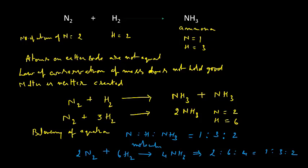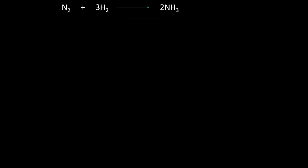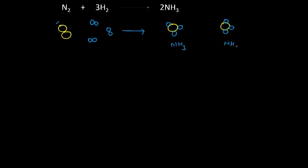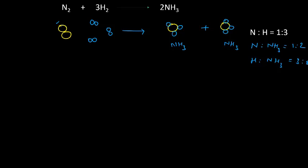See this balanced equation illustrated with a figure. One nitrogen molecule reacts with three hydrogen molecules and we get two ammonia molecules. The ratio of nitrogen to hydrogen is one to three; nitrogen to ammonia is one to two; and hydrogen to ammonia is three to two. We can take the ratio in any way depending on the problem given to us.